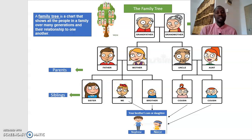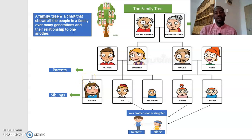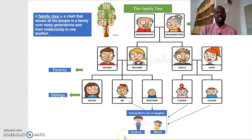Your parents bring you, and you may have a sister or a brother. Whether your brother or your sister, we call them siblings. Siblings means if you have a brother or a sister — you can say 'they are my siblings,' or 'I have two siblings.' If you have a sister or a brother, their son or daughter we call nephew or niece. Nephew means the son of your brother or sister. Niece means the daughter of your sister or brother.